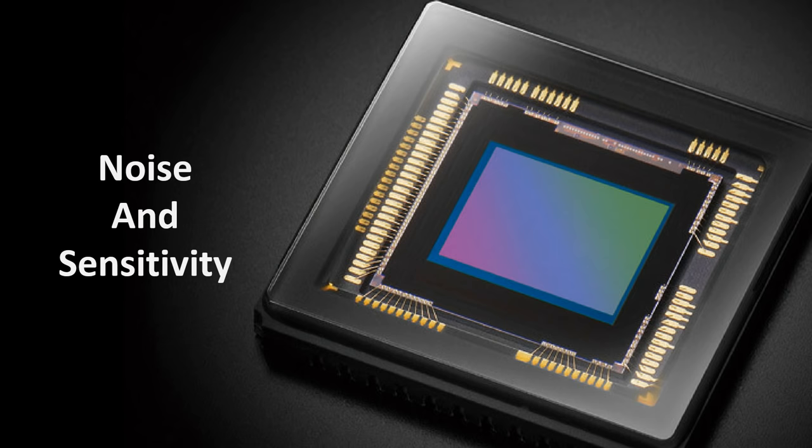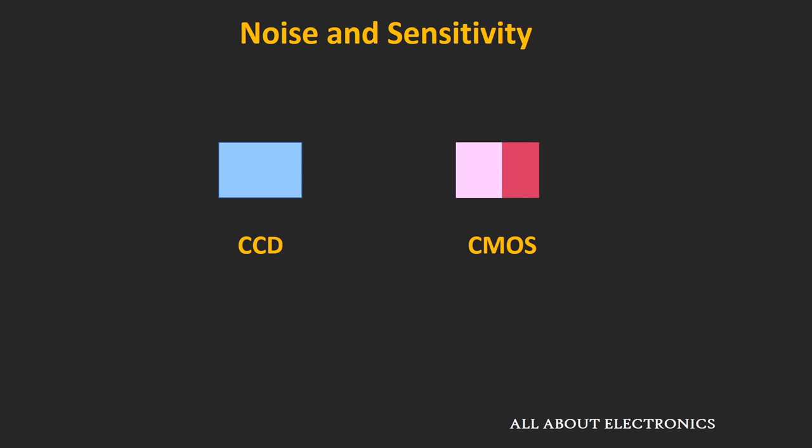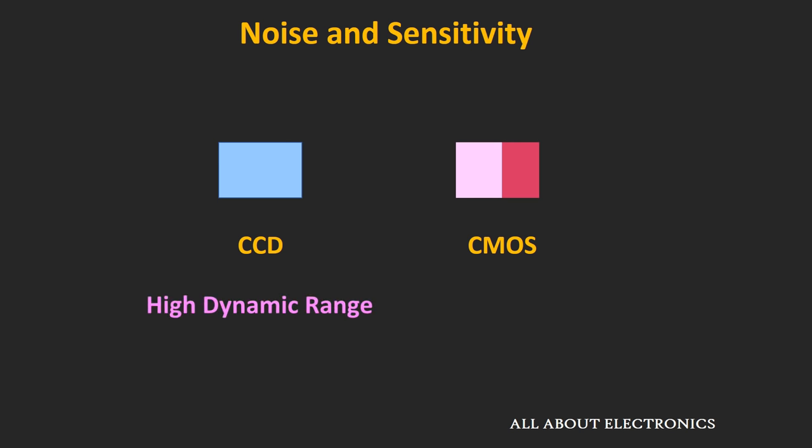Now let's compare these two sensors in terms of noise and sensitivity. As we have seen in the CMOS sensor, the charge-to-voltage converter circuit as well as the amplification circuit is integrated in the same pixel. Overall, the fill factor of this CMOS sensor will be less compared to the CCD sensor, and because of that the sensitivity of the CMOS sensor will be less compared to CCD. Because of that, the dynamic range of the CCD sensor is quite high compared to the CMOS sensor. Also, in the CMOS sensor, the amplifiers used in each pixel are not identical, so you will see non-uniform amplification, which acts as additional noise. But now the technology of the CMOS sensor has evolved so much that the noise and sensitivity of this CMOS sensor is almost at par with the CCD sensor.